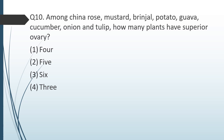Question number ten: among china rose, mustard, brinjal, potato, guava, cucumber, onion, and tulip, how many plants have a superior ovary — four, five, six, or three? The correct answer is option three: six. Other than guava and cucumber, which have inferior ovaries, all the remaining six plants have a superior ovary.